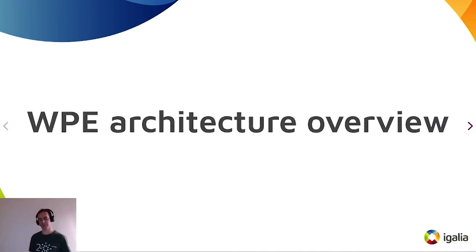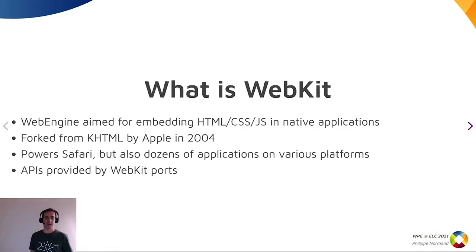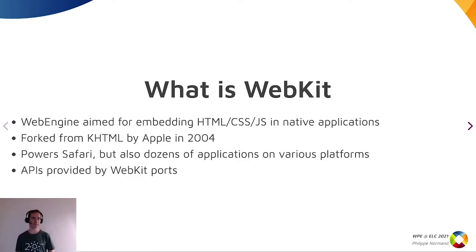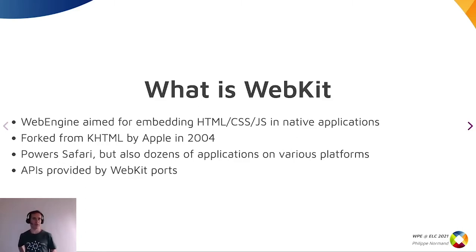So talking about WP architecture: WP is a WebKit port. What is WebKit? It's a web engine that was initially started by the KDE people and then was forked by Apple and renamed to WebKit. They wanted to use it to build their own web browser called Safari. So nowadays it's mainly maintained by Apple and us at Igalia. WebKit allows you to embed web pages using a widget provided by different kinds of WebKit ports, targeting different printing systems or rendering engines.